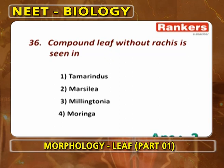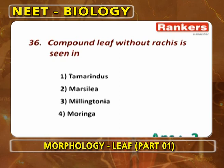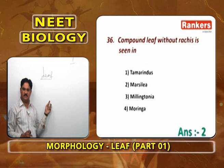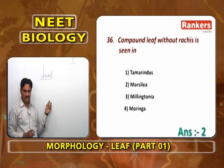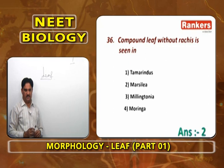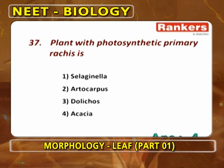Compound leaf without rachis is Marsilia — where leaflets are present at the tip of the petiole, not on a rachis. In Tamarindus, there is a primary rachis. In Melingtonia and Moringa, there are tertiary rachises.